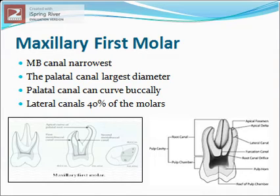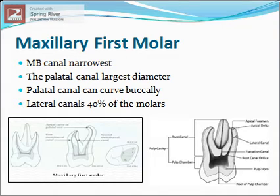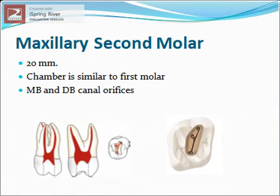The palatal canal can curve buccally in the apical third. Lateral canals are found in 40 percent of molars at the apical third and at the trifurcation area, also called the furcation canal, as shown in the picture. Maxillary second molar: the average length of this tooth is about 20 mm.